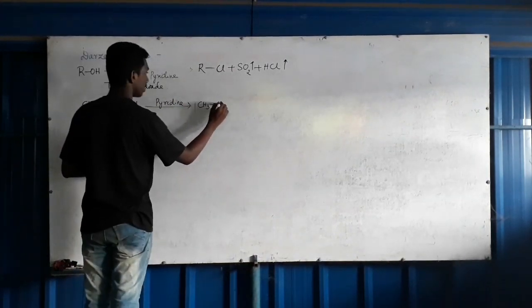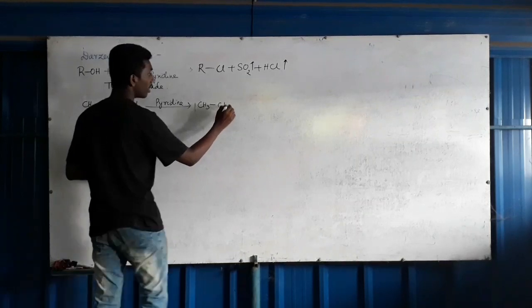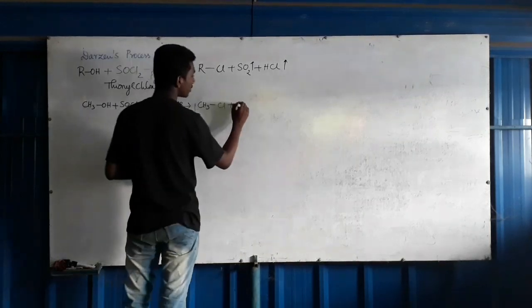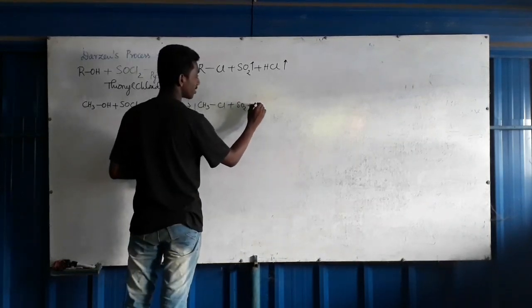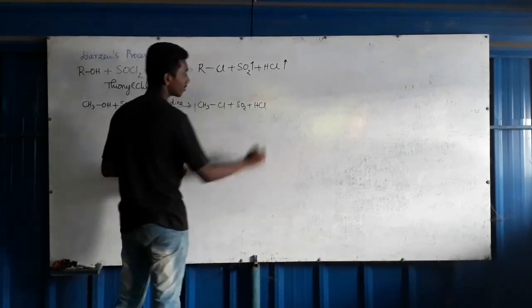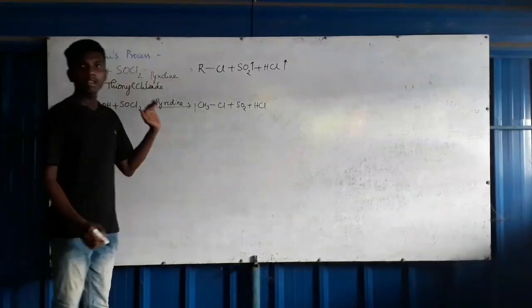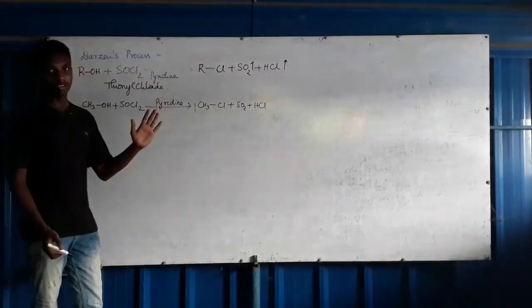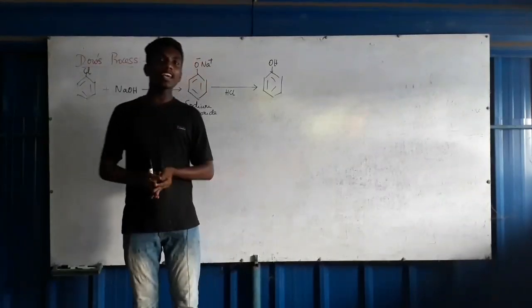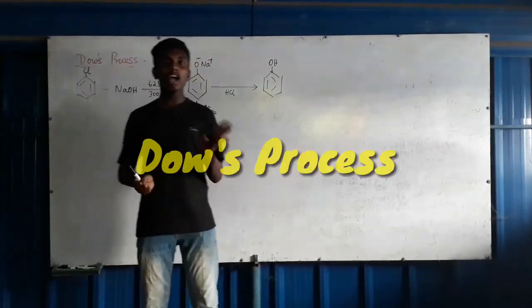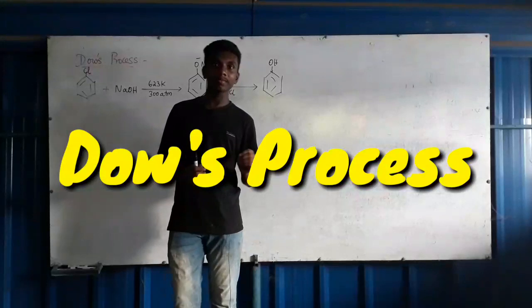The products are: RCl + SO2 + HCl. Since SO2 and HCl are gases that escape, we obtain a pure form of the alkyl halide. This is the Darzens Process.